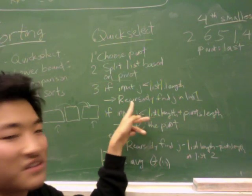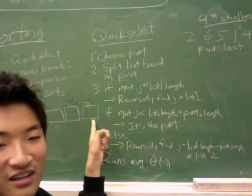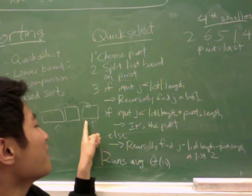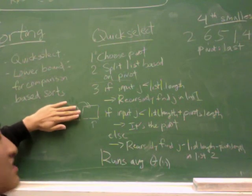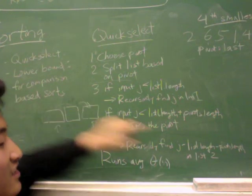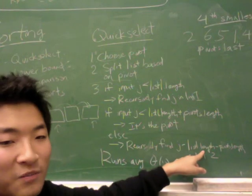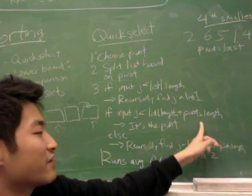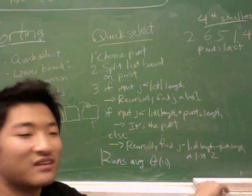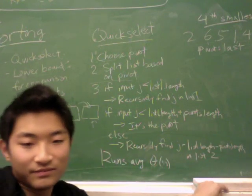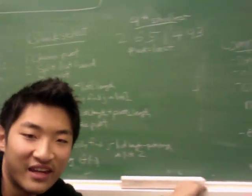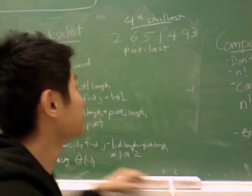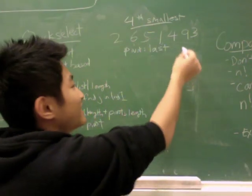Otherwise, if it's not the first two cases, then it's in list two and so what I have to do is recursively find j in list two. But since I'm deleting these first two lists, I have to subtract j from list one dot length and pivots dot length in list two. In arrays, pivots dot length is just one. We'll see how that happens here because we're going to use QuickSelect with an array in our little simulation here.